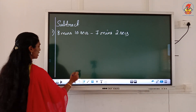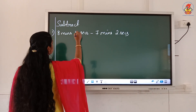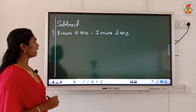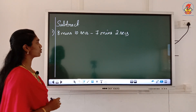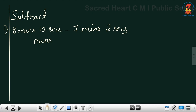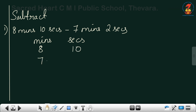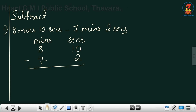First subtraction question: 8 minutes 10 seconds minus 7 minutes 2 seconds. Here also you do it separately. First I do 10 minus 2, I get 8 seconds. Here I do 8 minus 7, I get 1 minute. I do not have anything to borrow here since it is already a small number. So the answer is 1 minute 8 seconds.